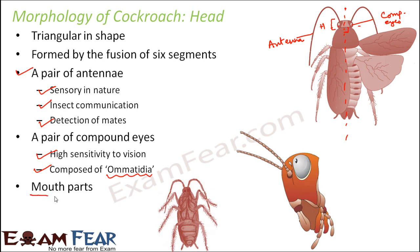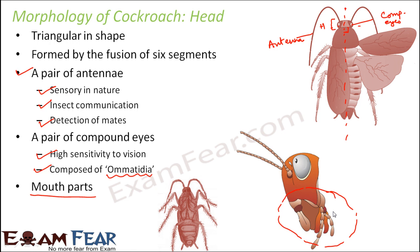The last feature of the head is the mouth parts. If you look at the head of the cockroach very closely, you can see the antenna, the compound eye — whose visible region is the cornea — and the entire lower region forms the mouth. The mouth consists of many different parts and structures, which we will discuss in more detail in the next slide.